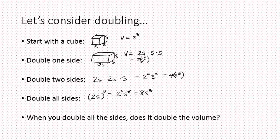So if you double all the sides of a cube, the volume gets multiplied by eight. Here's the key question you'll see in the homework: when you double all the sides, does it double the volume? The answer is no — doubling all the sides actually multiplies the volume by eight.